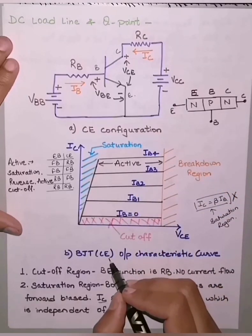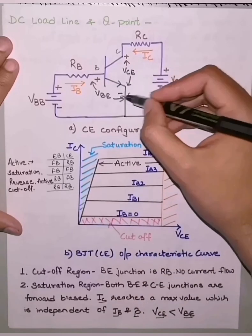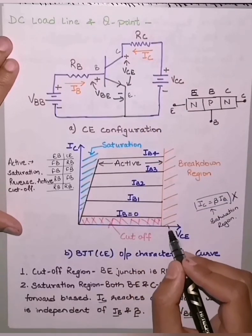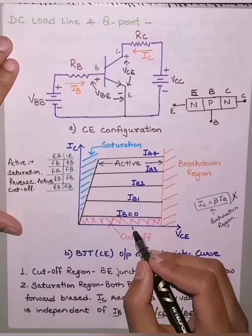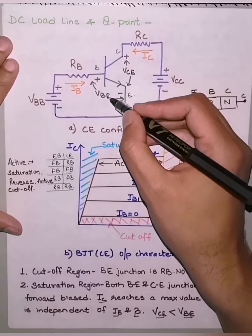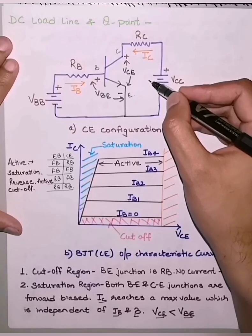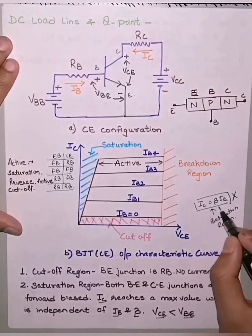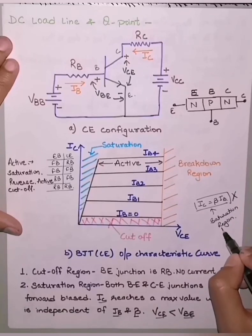The first region is the cutoff region, obtained when the base-emitter or input junction is reverse biased. In this region, no current flows or only a very small leakage current flows. The second is the saturation region, when both the base-emitter junction (input) and the collector-emitter junction (output) are forward biased. In the saturation region, IC is independent of IB and beta — the formula IC = β·IB is not applicable here.